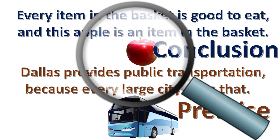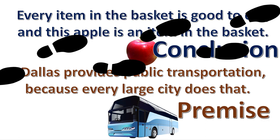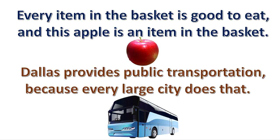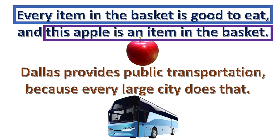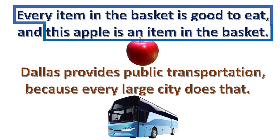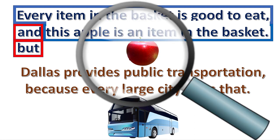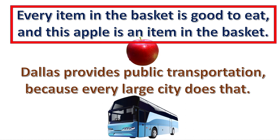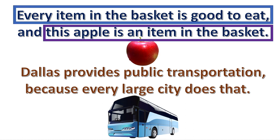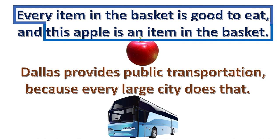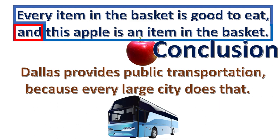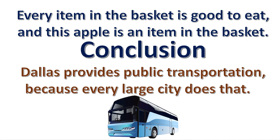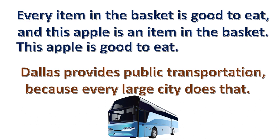To identify what is missing, there are a few hints. One: if there are two statements joined together by a conjunction — and, but, etc. — the missing statement is probably a conclusion. Look at the first example. See the two statements joined together with the conjunction 'and'? The missing statement is a conclusion. The conclusion is: this apple is good to eat.